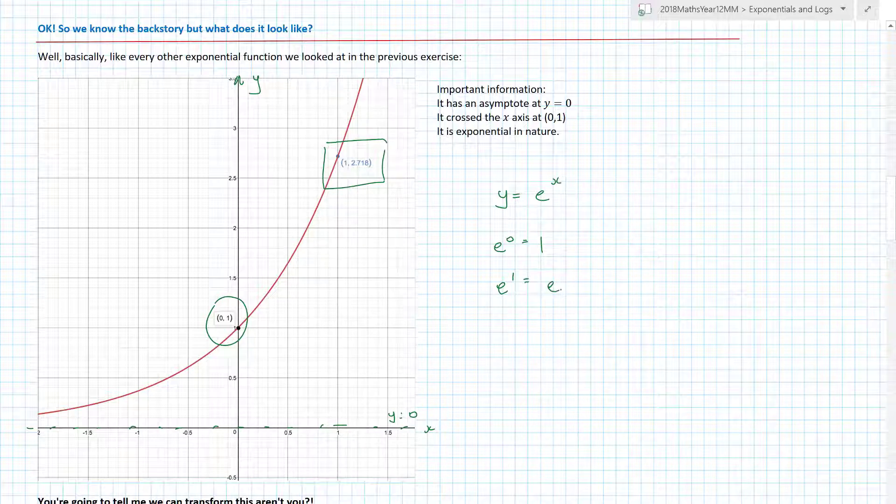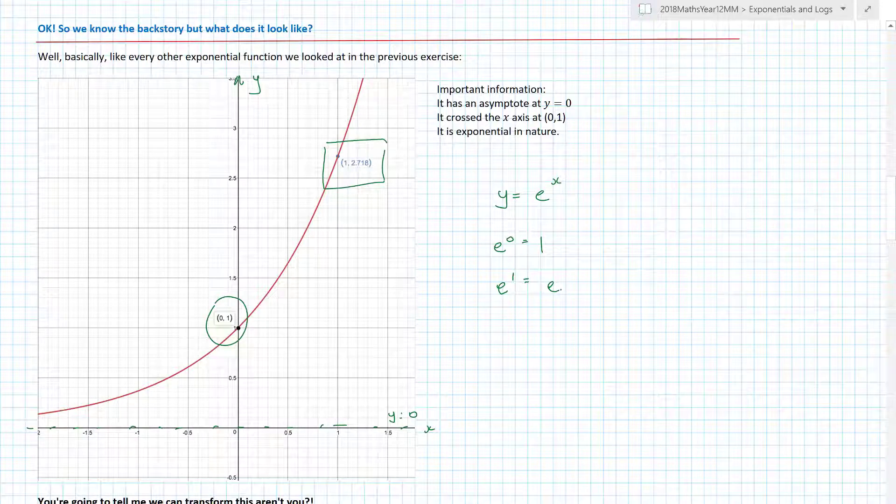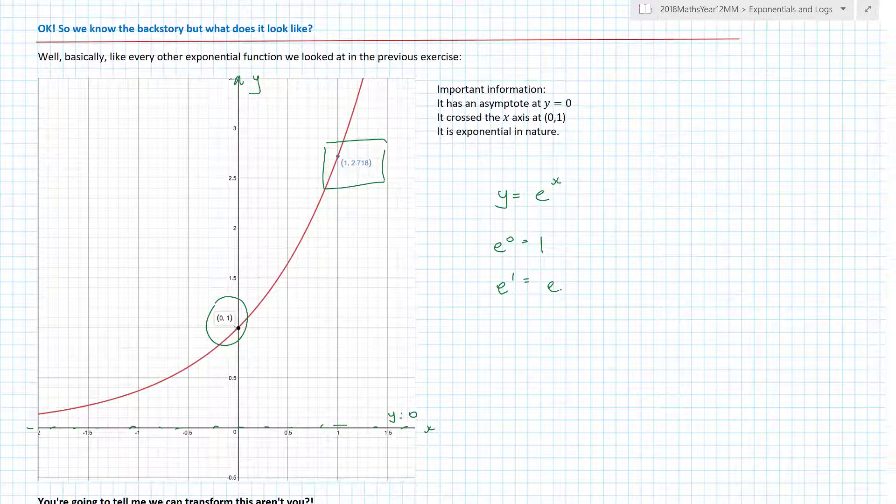Now an important point to notice for your methods exam: you're always going to be expected to write answers as exact values. And e is an exact value. So there is nothing wrong with writing a coordinate as (1, e²) or (3, e+1). Unless the question states otherwise, you should not put your answers in decimal points. For A-levels and all other courses, you need to make sure you understand what your exam board asks. But over here in Australia we have to make sure that we write things in exact values, and e is an exact value.